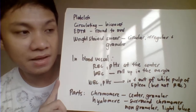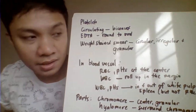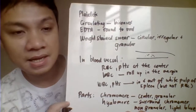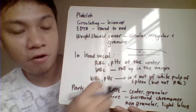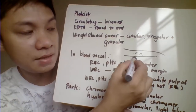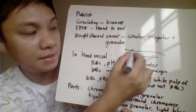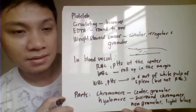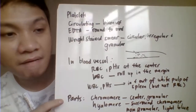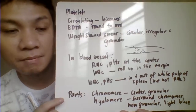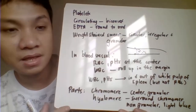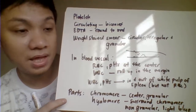Within blood vessels, platelets along with RBCs are found at the center of your blood vessel, flowing within it. WBCs, on the other hand, tend to be concentrated along the vessel wall site — they adhere and marginate within the blood vessel wall.